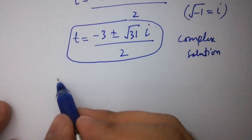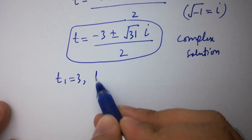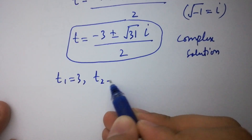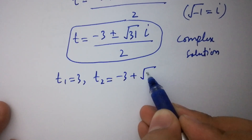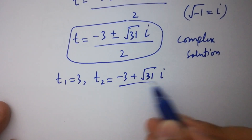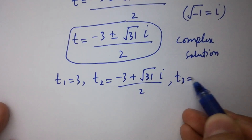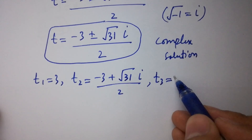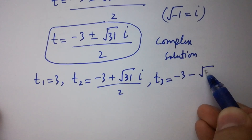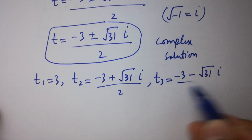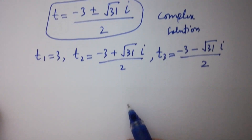So we have three solutions: t1 equal to 3, t2 equal to minus 3 plus square root of 31 times i over 2, and t3 equal to minus 3 minus square root of 31 times i over 2.